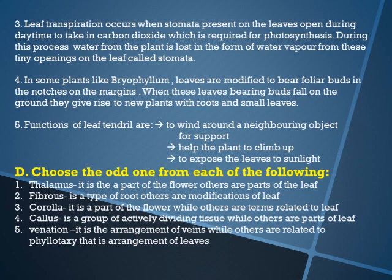Question number four: how does vegetative propagation occur in leaves? In some plants like Bryophyllum, leaves are modified to bear foliar buds — foliar means leaf buds — in the notches on the margins. When these leaves bearing the buds fall on the ground, they give rise to new plants with roots and small leaves.